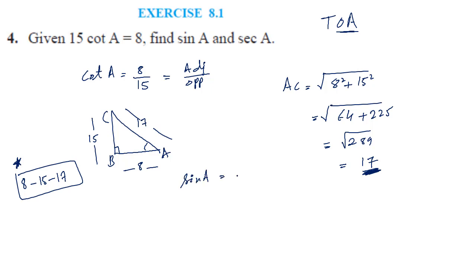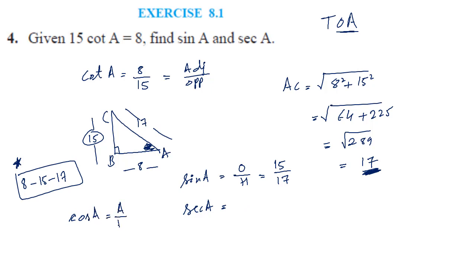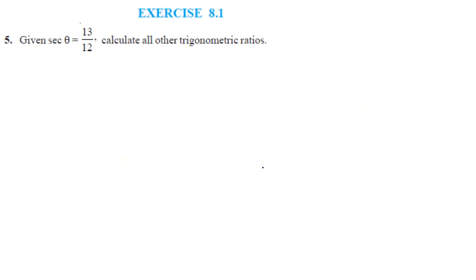Now sin A: sine is opposite by hypotenuse, so with respect to angle A, opposite side is 15 and hypotenuse is 17, giving sin A = 15 by 17. For sec A, we first find cos A, which is adjacent divided by hypotenuse = 8 by 17. Sec A is the reciprocal of cos A, so sec A = 17 by 8.